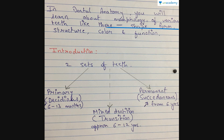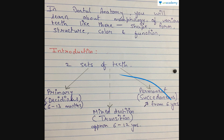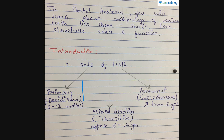In dental anatomy you learn about the morphology of various teeth — their shape, structure, color, form, and so on. Basically there are two sets of teeth: the primary dentition, also known as deciduous teeth, and the permanent dentition. Primary starts from 6 to 13 months of age, while permanent teeth start from six years. In between is the mixed dentition phase, also known as the transition phase, from six to twelve years.